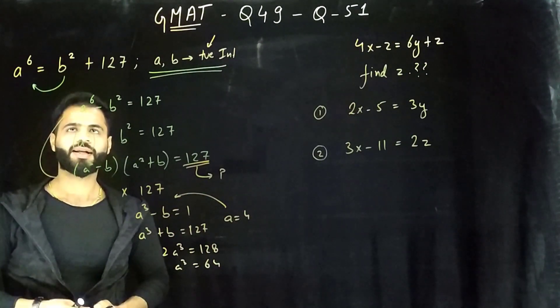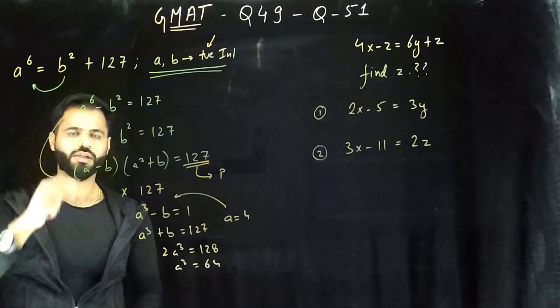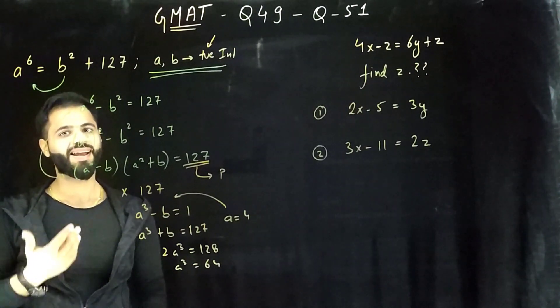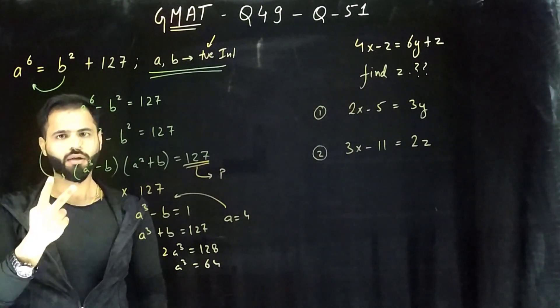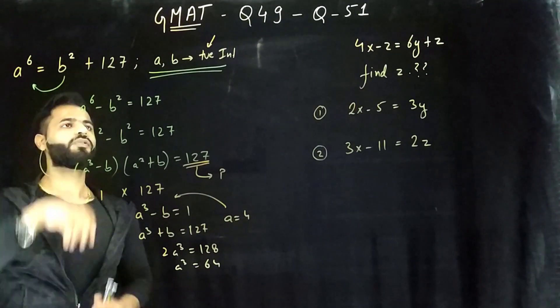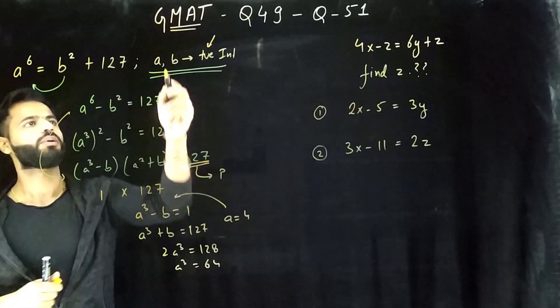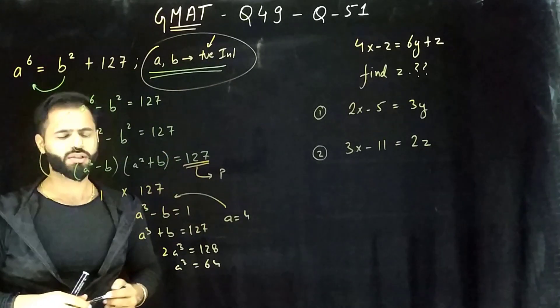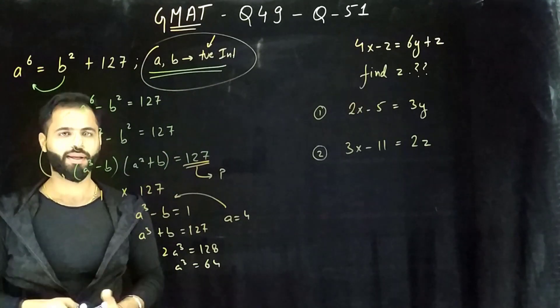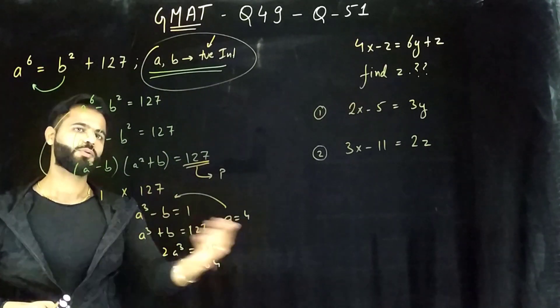So I think that's quite clear that sometimes even one equation is sufficient to give you the values of a and b. It can hide two equations in just one equation. So be careful if you have anything given to you like this - a and b positive integers - this will definitely have a role to play. I hope this is clear. Let's move to the second one.